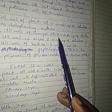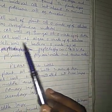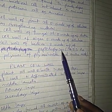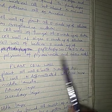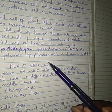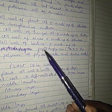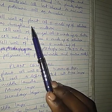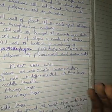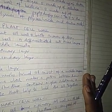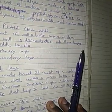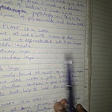The cell wall of a plant cell is made up of cellulose as a strengthening material. The cell wall of a fungal cell is made up of chitin. The cell wall of algae is made up of cellulose. The cell wall of bacteria is made up of peptidoglycan, which is a polymer of polysaccharide and amino acid. Teachers may ask you the strengthening material of the cell wall of these four organisms.